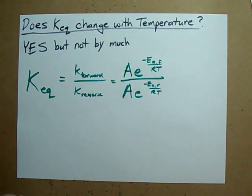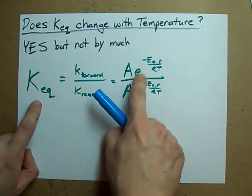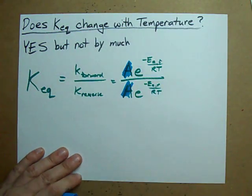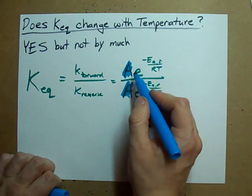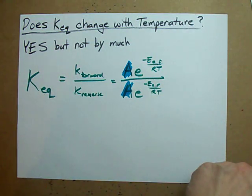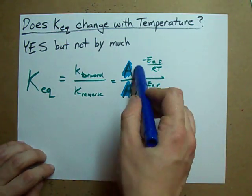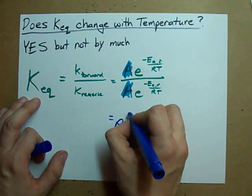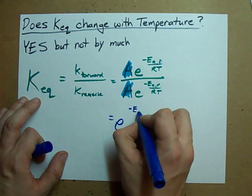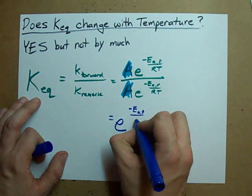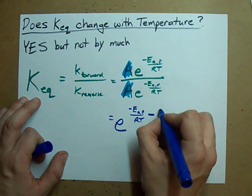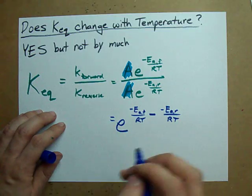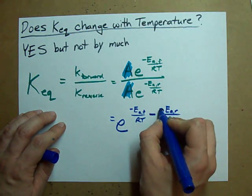What you'll notice immediately is that when you're comparing these two expressions for Keq, the A's cancel each other out, and you're dividing two numbers with the same base. May I remind you of an exponent law: if you divide two numbers with the same base, you subtract the exponents. So we can combine these. We get e to the negative Ea of the forward reaction over RT, minus negative Ea of the reverse reaction over RT.